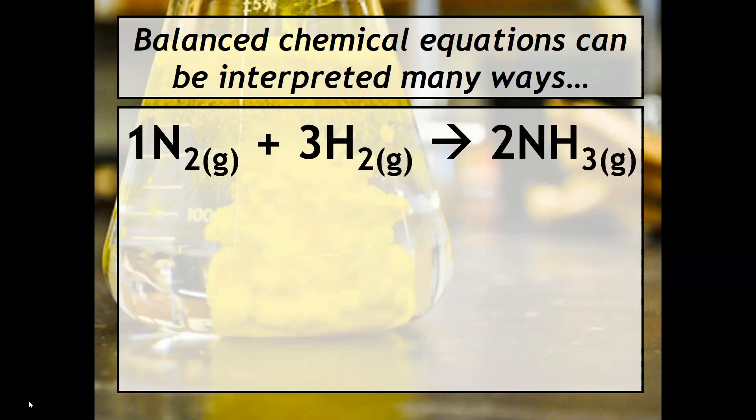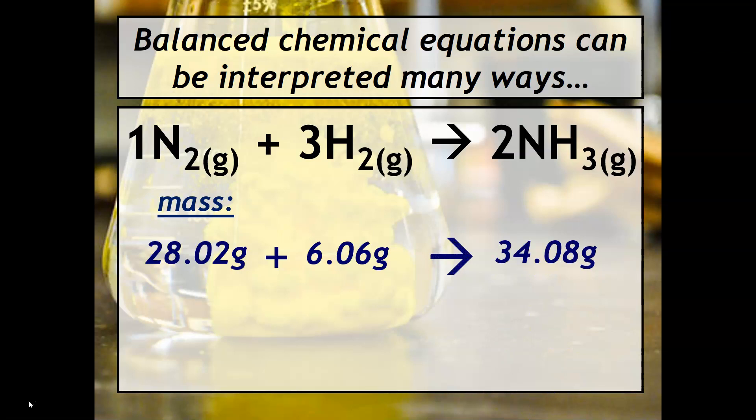Another way, because chemists really don't talk just about individual molecules, is to talk about this in terms of mass. So we could start out with for example 28.02 grams of nitrogen reacts with 6.06 grams of hydrogen and it produces 34.08 grams of ammonia. Remember, law of conservation says that the mass of the reactants have to equal the mass of the products.